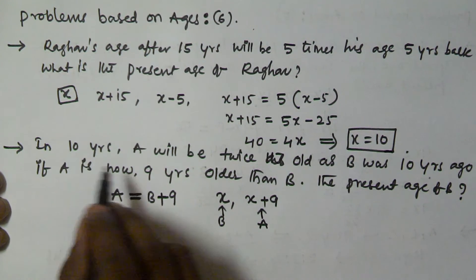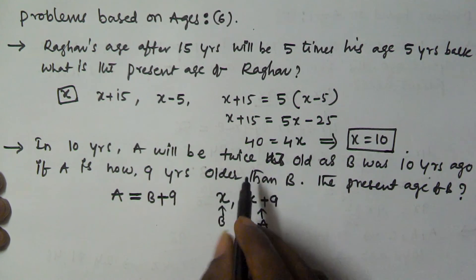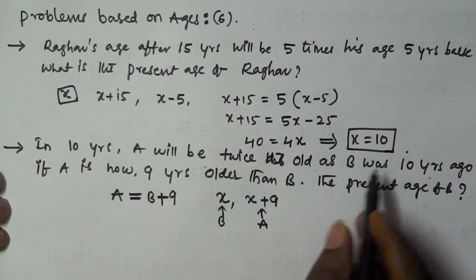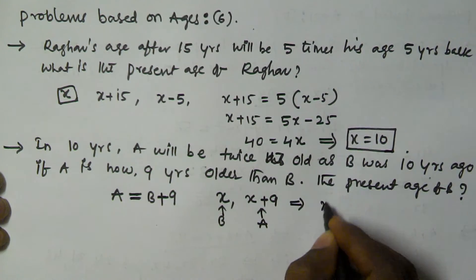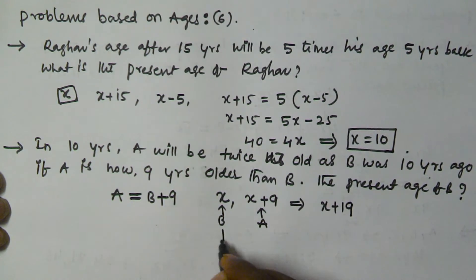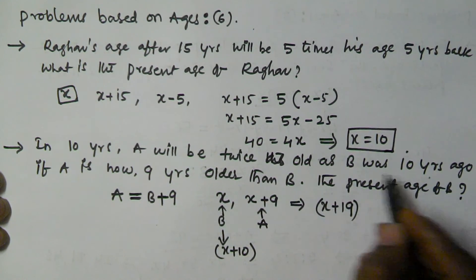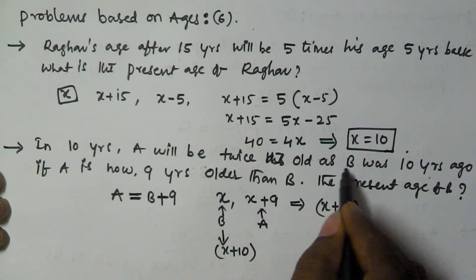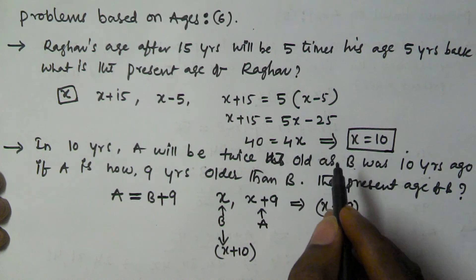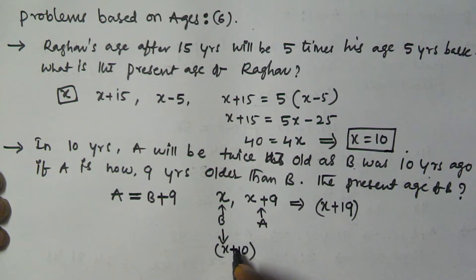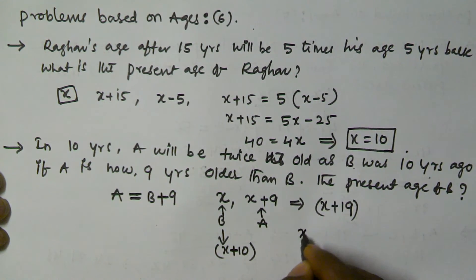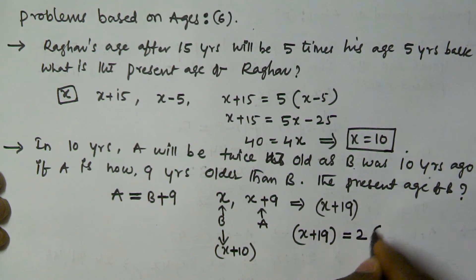In 10 years, A will be twice as old as B was 10 years ago. So in 10 years, A is going to be x plus 19 (since A's current age is x plus 9). B was 10 years ago means we take x minus 10. So in 10 years, A's age — x plus 19 — is equivalent to twice the age of B 10 years ago.